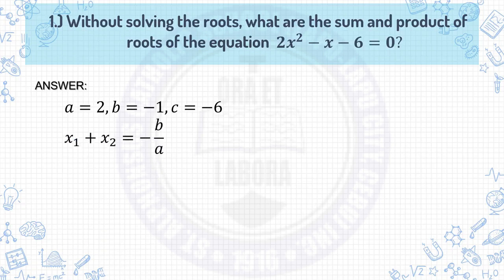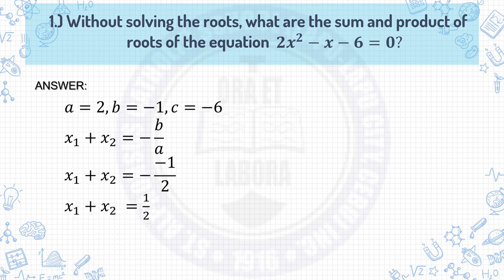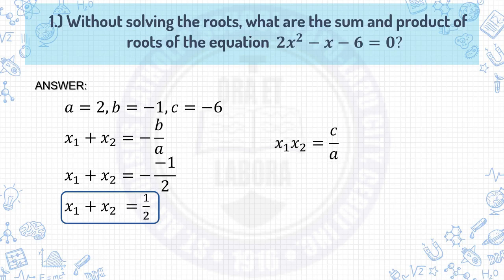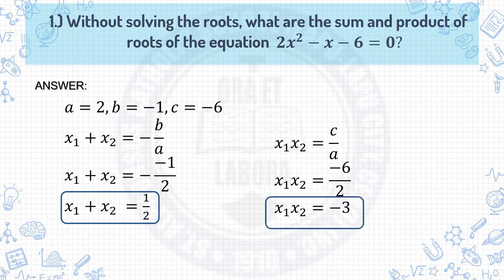For the sum: x₁ plus x₂ equals negative b over a. Substituting the values of b and a, we have the negative of negative 1 over 2, and a negative of negative 1 over 2 is one half. So the sum of the roots is one half. For the product of the roots: x₁ times x₂ equals c over a. Substituting, c is negative 6 and a is 2, so we have negative 6 over 2, which equals negative 3. The product of the roots is negative 3.